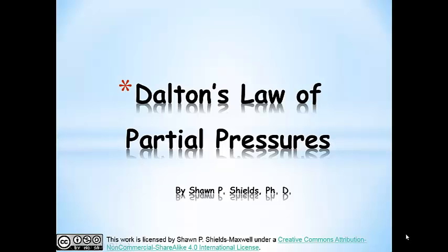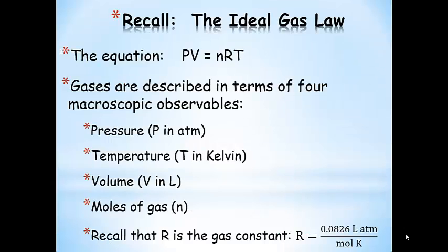Dalton's Law of Partial Pressures. Let's remind ourselves of the ideal gas law. The equation PV equals nRT: pressure times volume is equal to the moles of the gas times the gas constant and the temperature. Gases are described in terms of four observables: pressure, temperature, volume, and moles of gas. The gas constant we're using has liter atmosphere mole Kelvin units, which is why those units are listed for each observable.